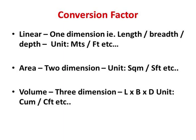Moving on to conversion factors, we have three different types of conversion: linear measurements, area, and cubic content or volume. Linear is one dimension — length, breadth, or height — generally expressed in meters or feet. Area has two dimensions — length and breadth, or length and height — expressed in square meters or square feet. Volume requires three dimensions — length, breadth, and height — expressed in cubic meters or cubic feet.